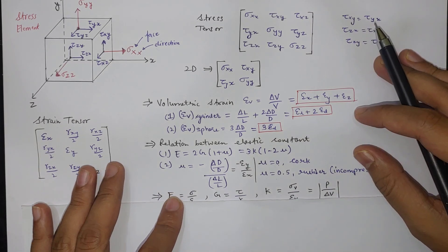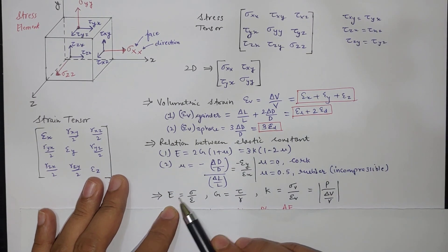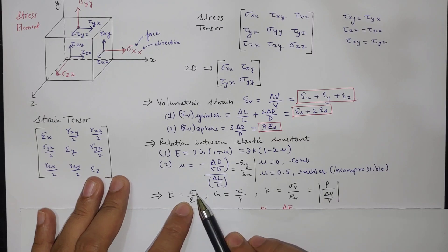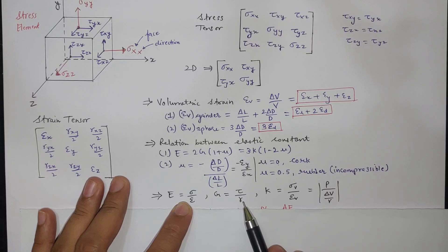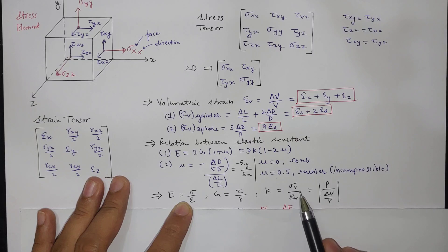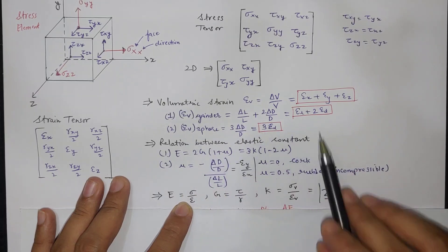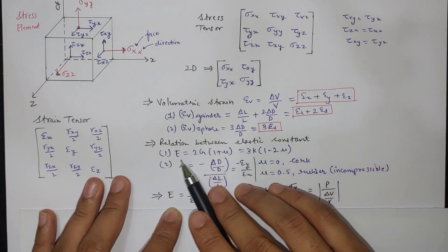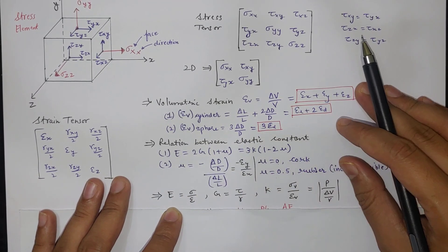Now if you see E is equal to stress upon strain, here stress is normal stress and normal strain. G is equal to shear stress upon shear strain. Bulk modulus is volumetric stress upon volumetric strain. Volumetric stress is pressure in hydrostatic and volumetric strain is delta V by V. So this is how we can calculate these three and these are the relations between these elastic constants.